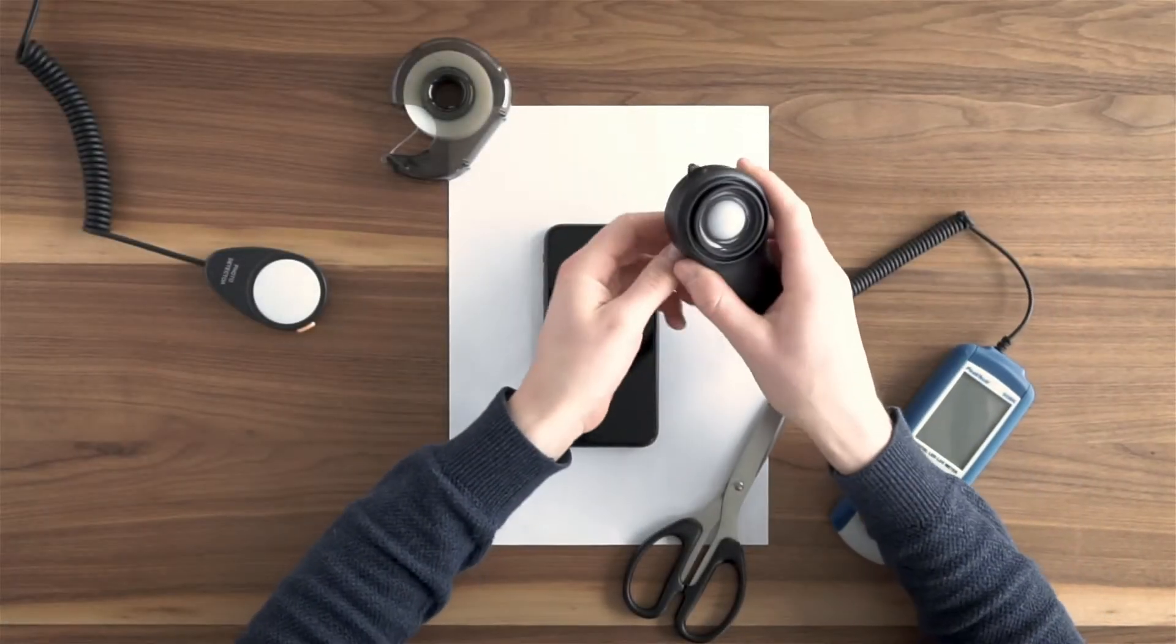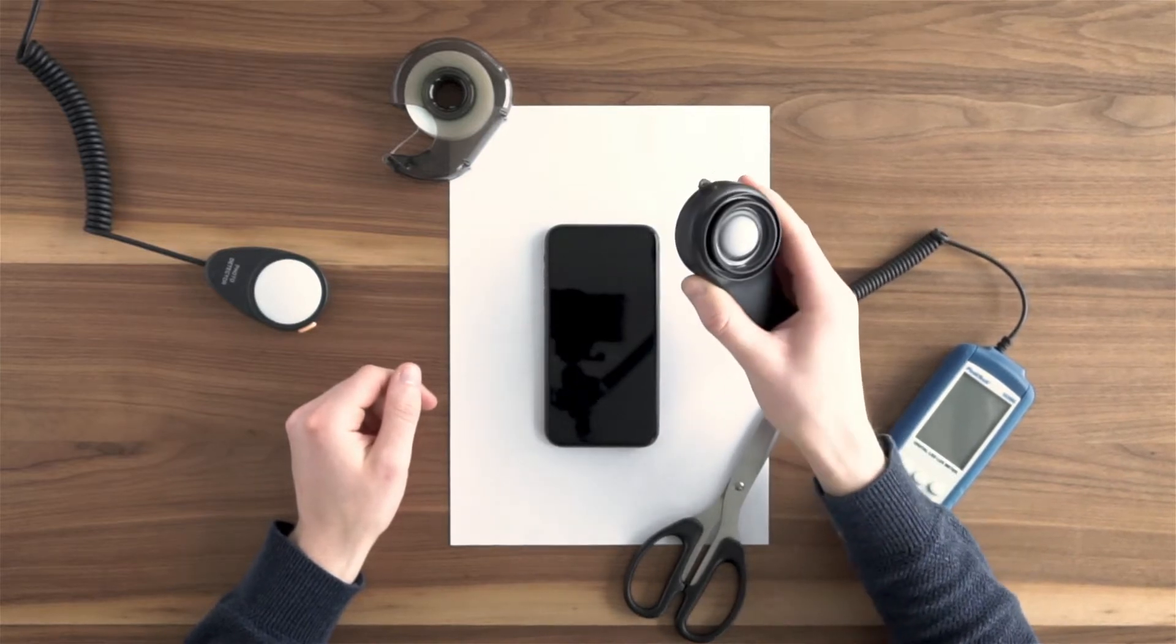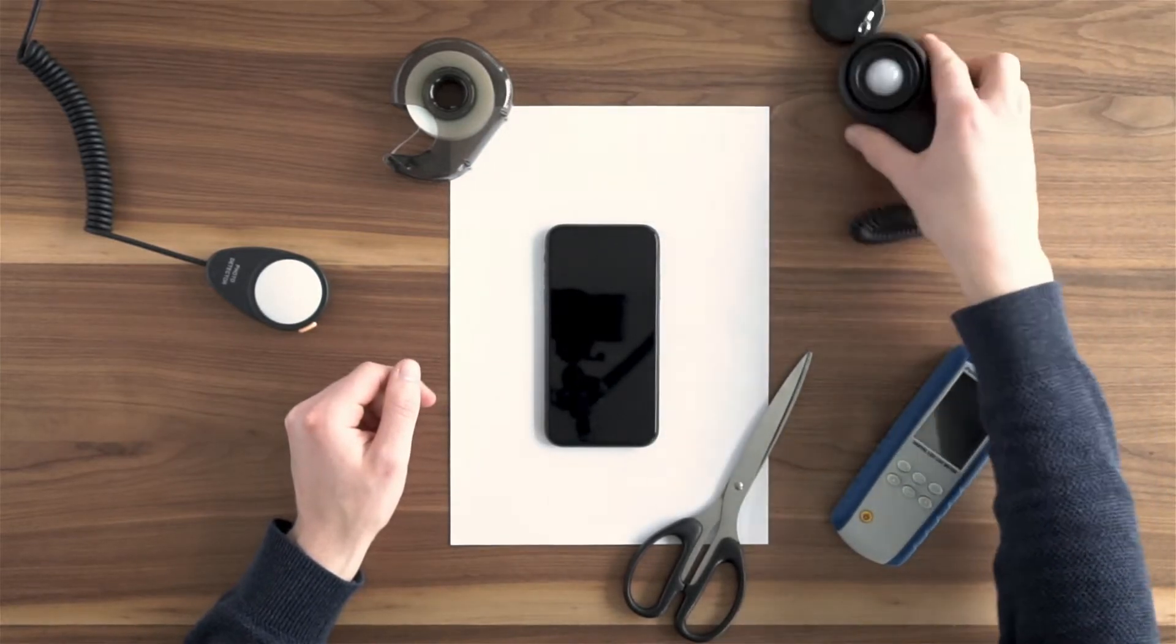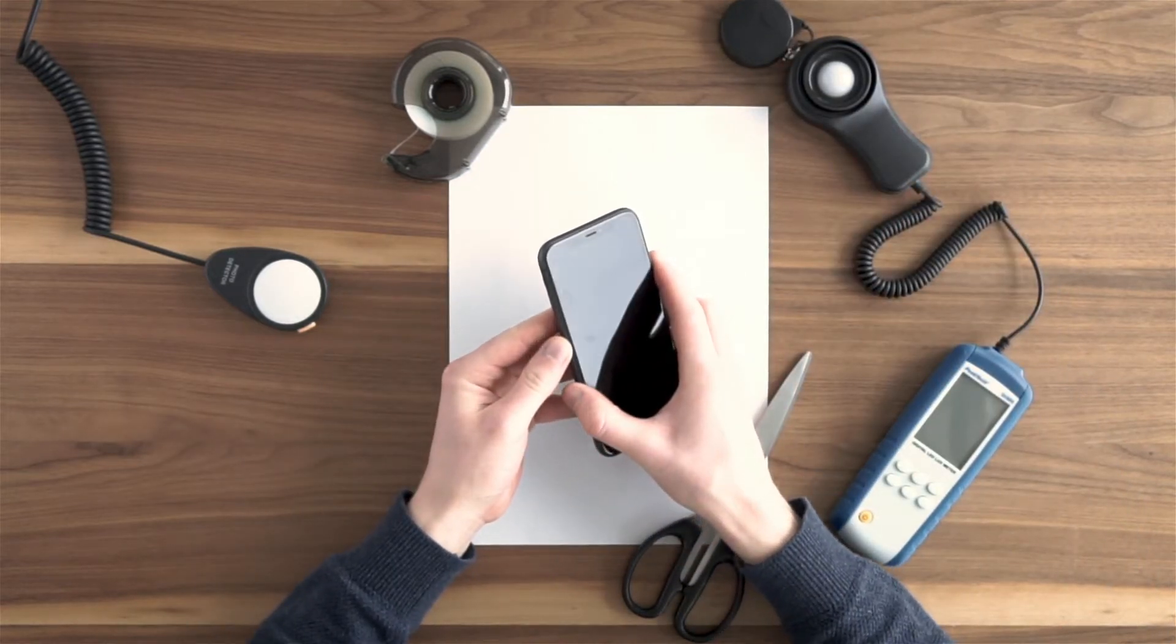All light meters need a diffuser to properly disperse the light before it hits the sensor. In our case, this means that the front camera, which acts as the sensor, must be covered by a diffuser to measure accurately.